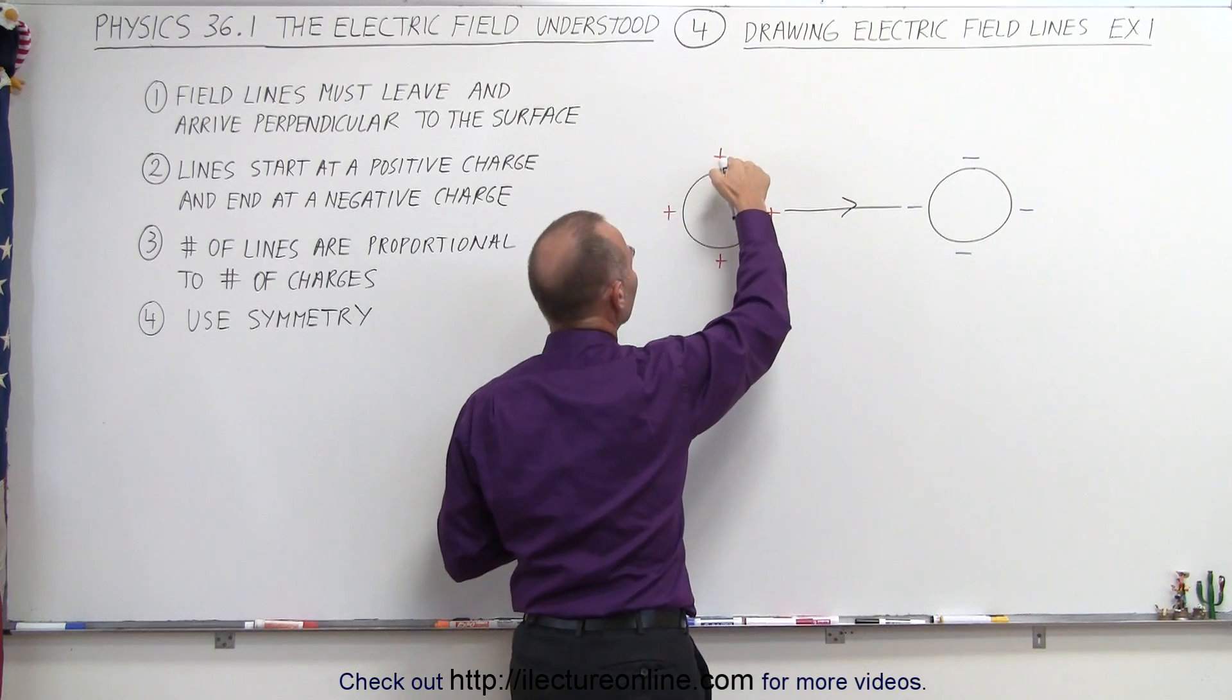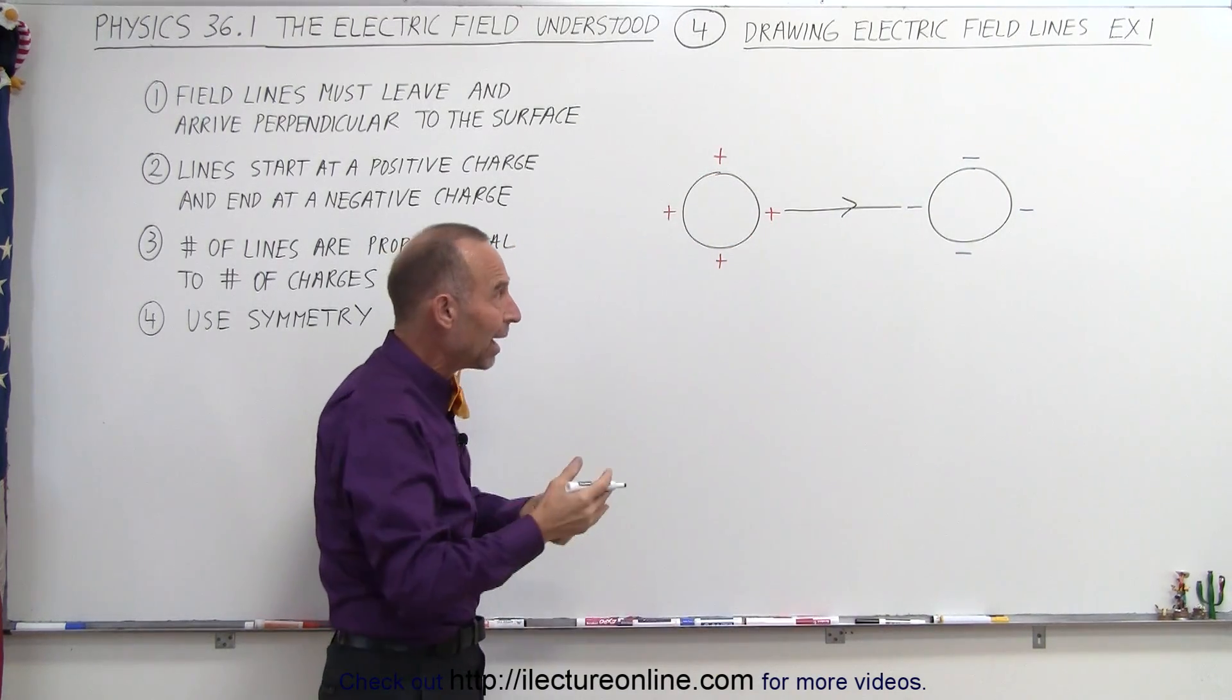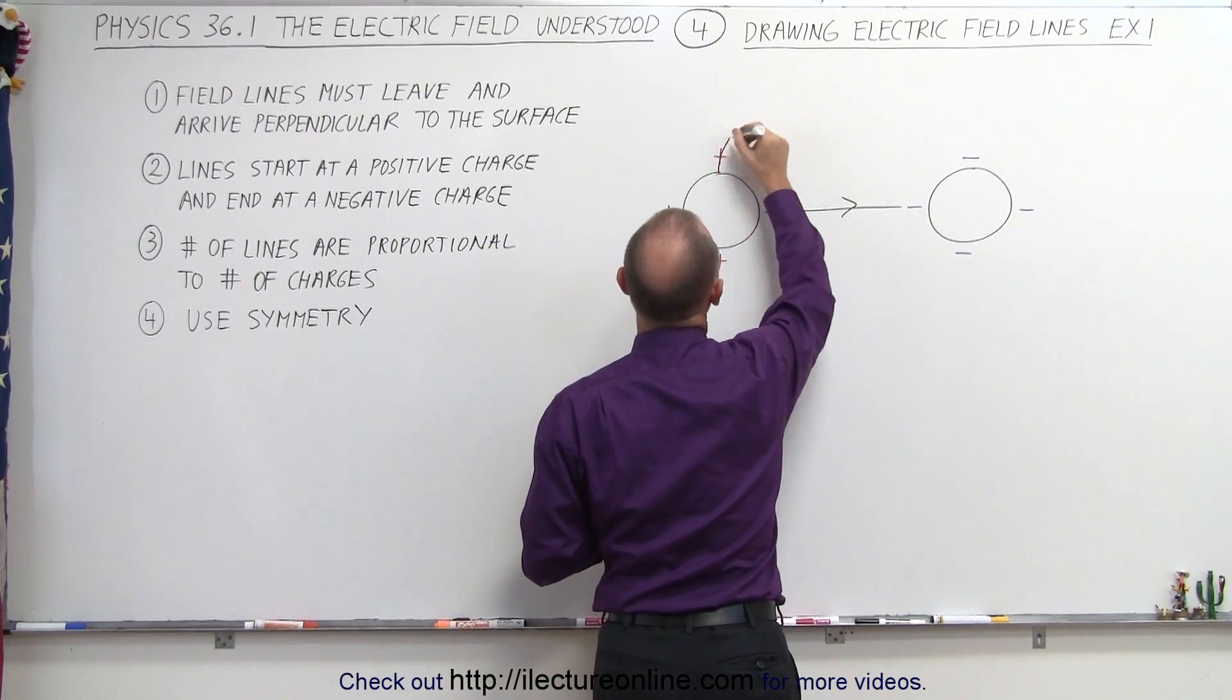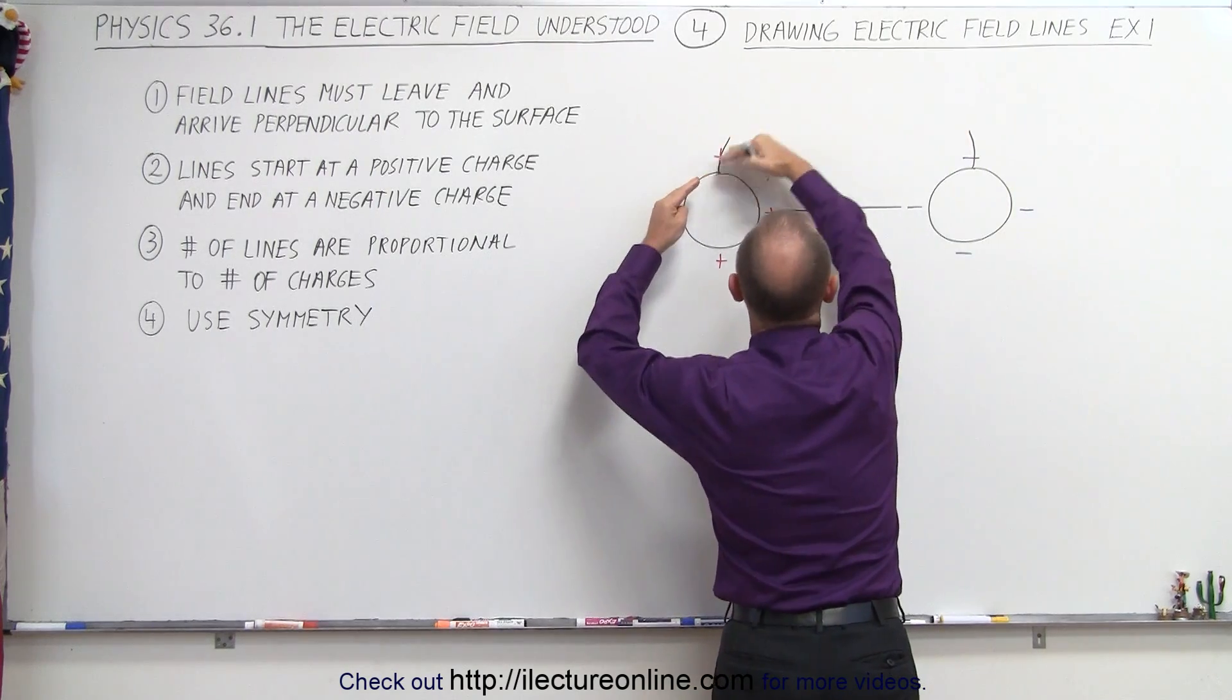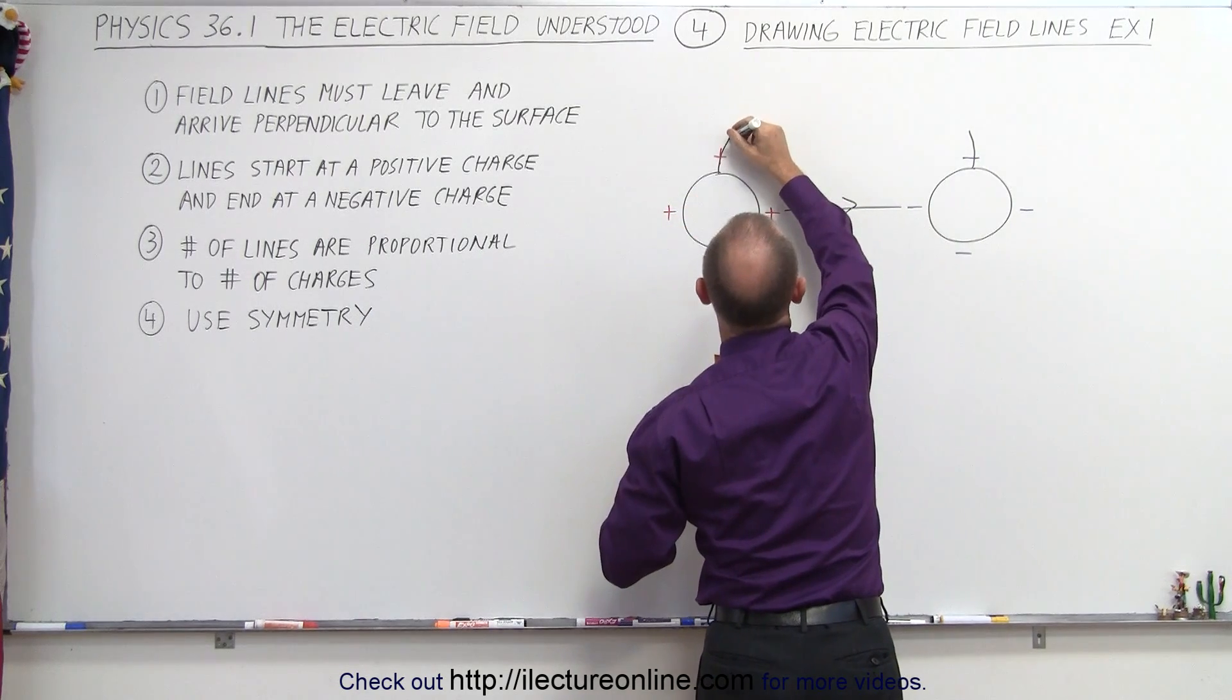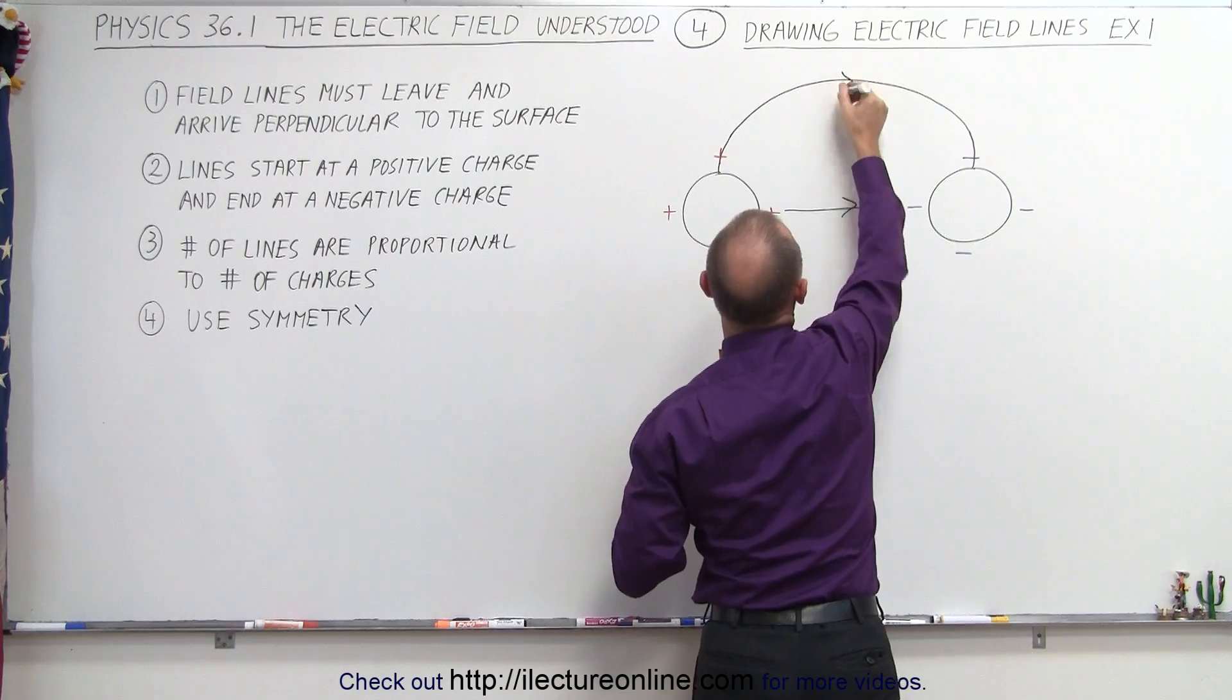Now we need to have a line going from here to this charge, and we realize that they need to end and arrive perpendicular to the surface, which means the line should start like this. And then it begins to curve because, of course, the positive charge is attracted to the negative charge and vice versa. So that means the electric field line will look something like that.